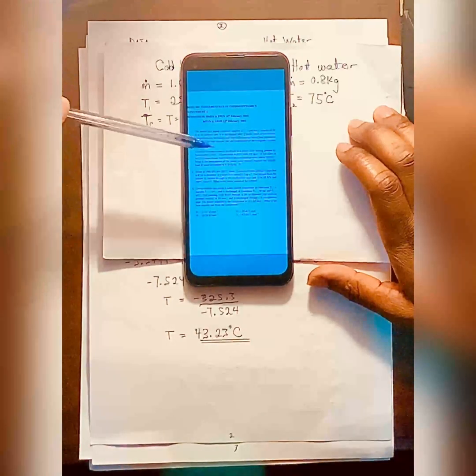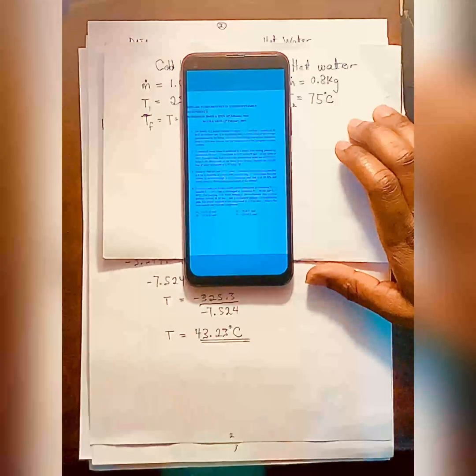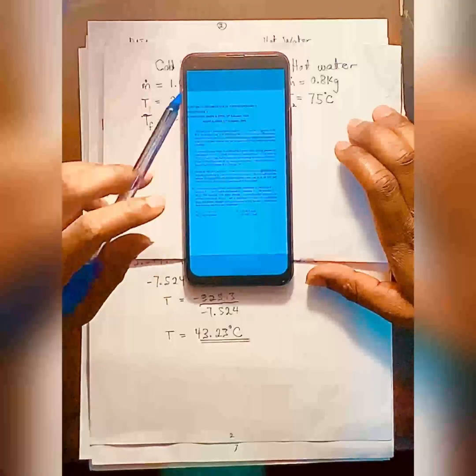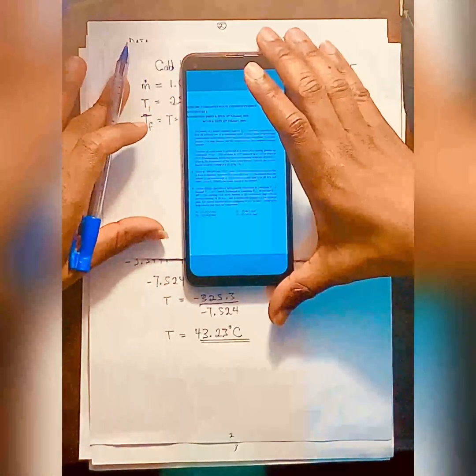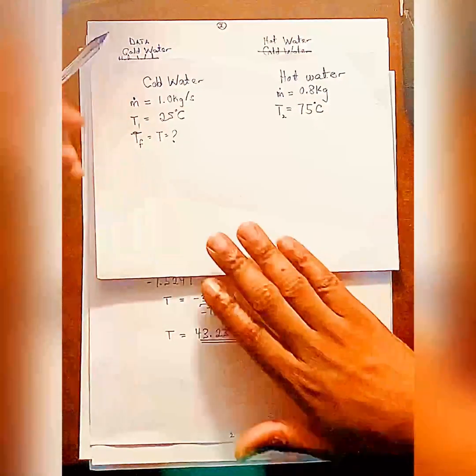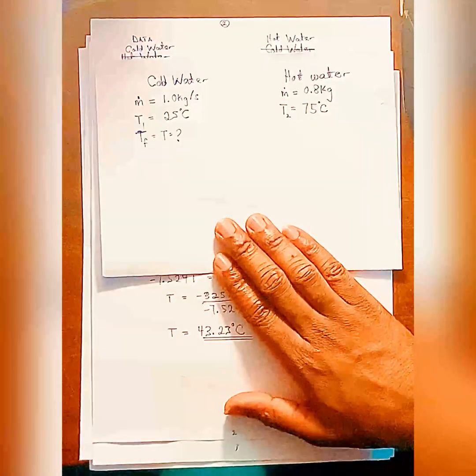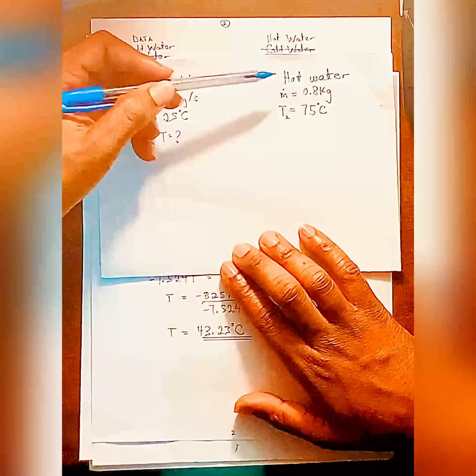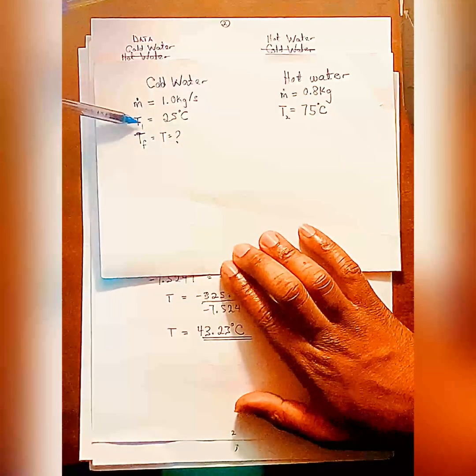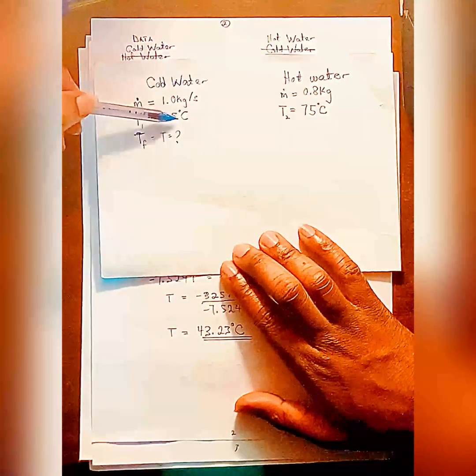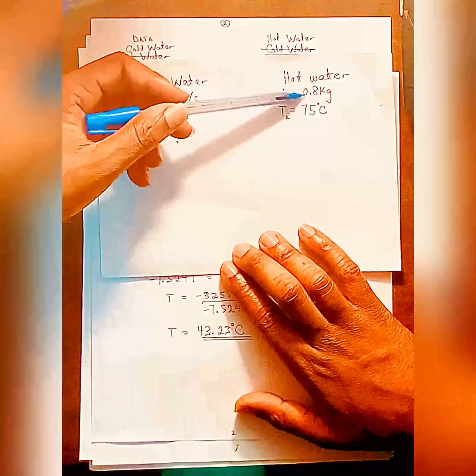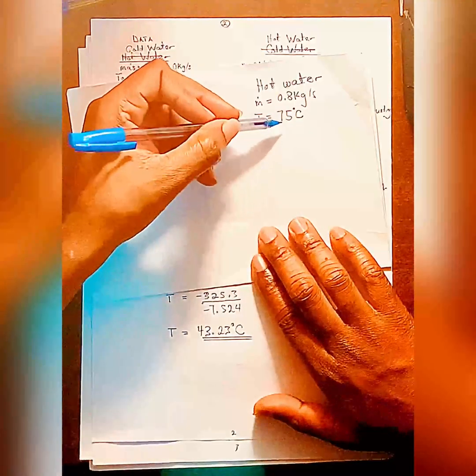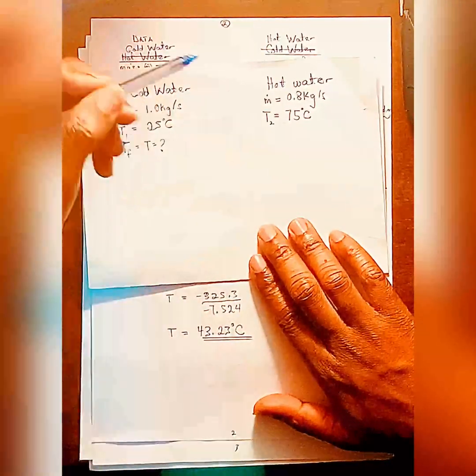Assuming the specific heat capacity of water is constant at 4.18 kJ per kg per Kelvin. So we can write our data. For cold water, they've given us mass flow rate, which is 1.0 kg per second, and the temperature is 25 degrees Celsius. And for hot water, the mass flow rate is 0.8 kg per second, and the temperature is 75 degrees Celsius.